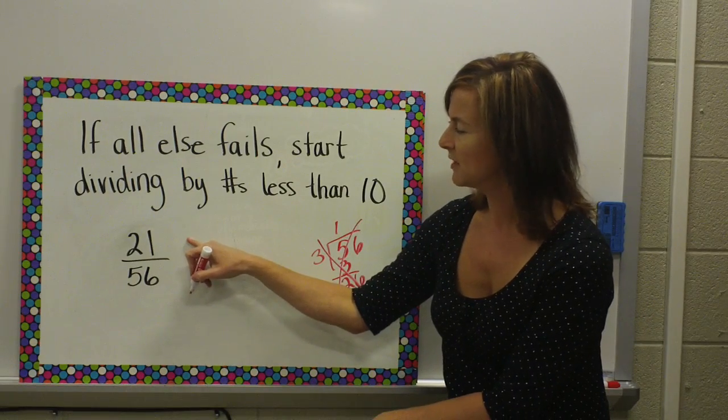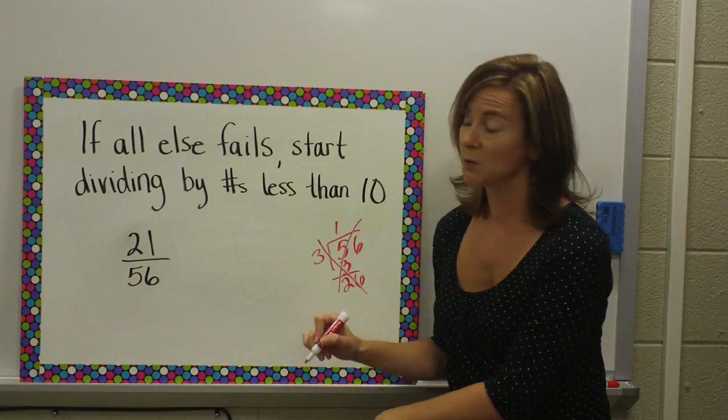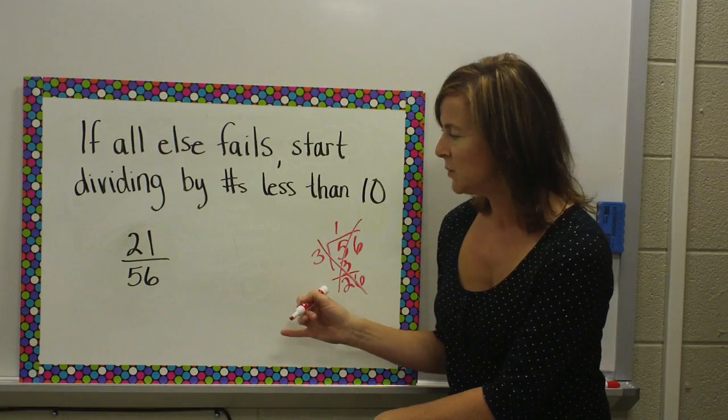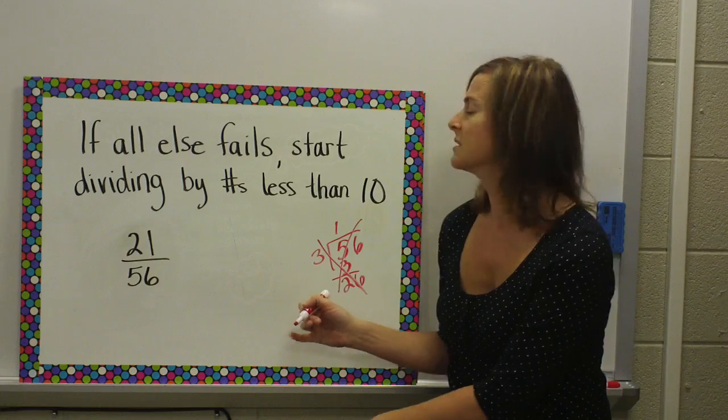4, nothing times 4 gives me 27. 5, they both don't end in a 0 or 5. 6 won't work, because nothing times 6 gives me 21.